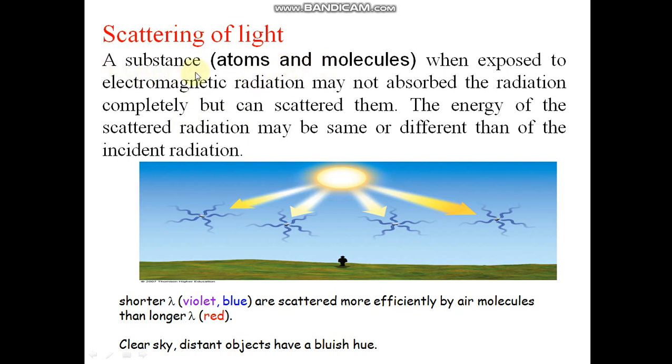Scattering of light. A substance's atoms and molecules when exposed to electromagnetic radiation may not absorb the radiation completely but can scatter them. The energy of the scattered radiation may be the same or different than the incident radiation. Shorter lambda are scattered more efficiently by air molecules than longer lambda. This is why the sky appears blue.